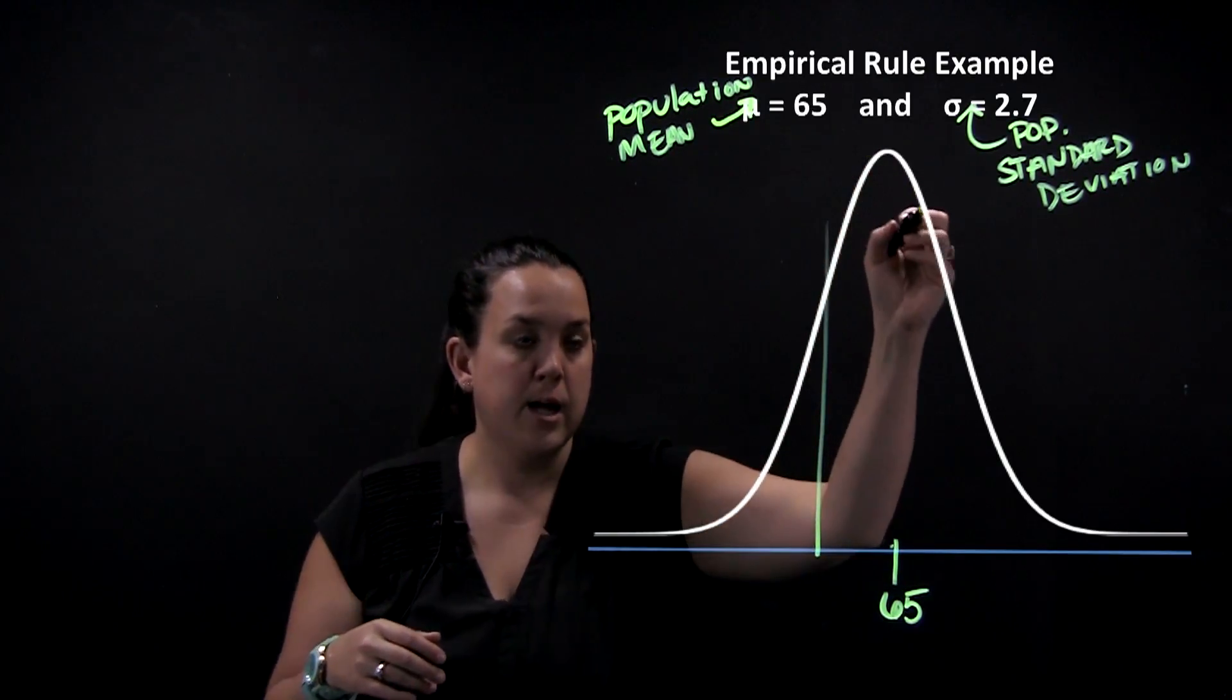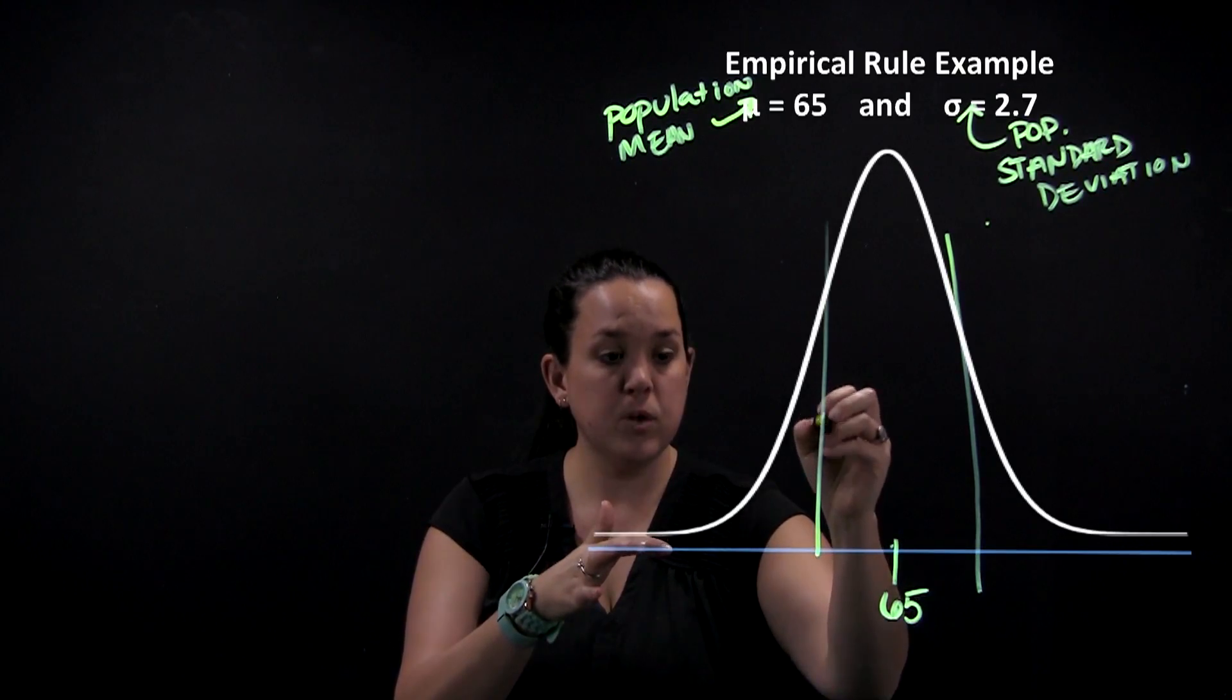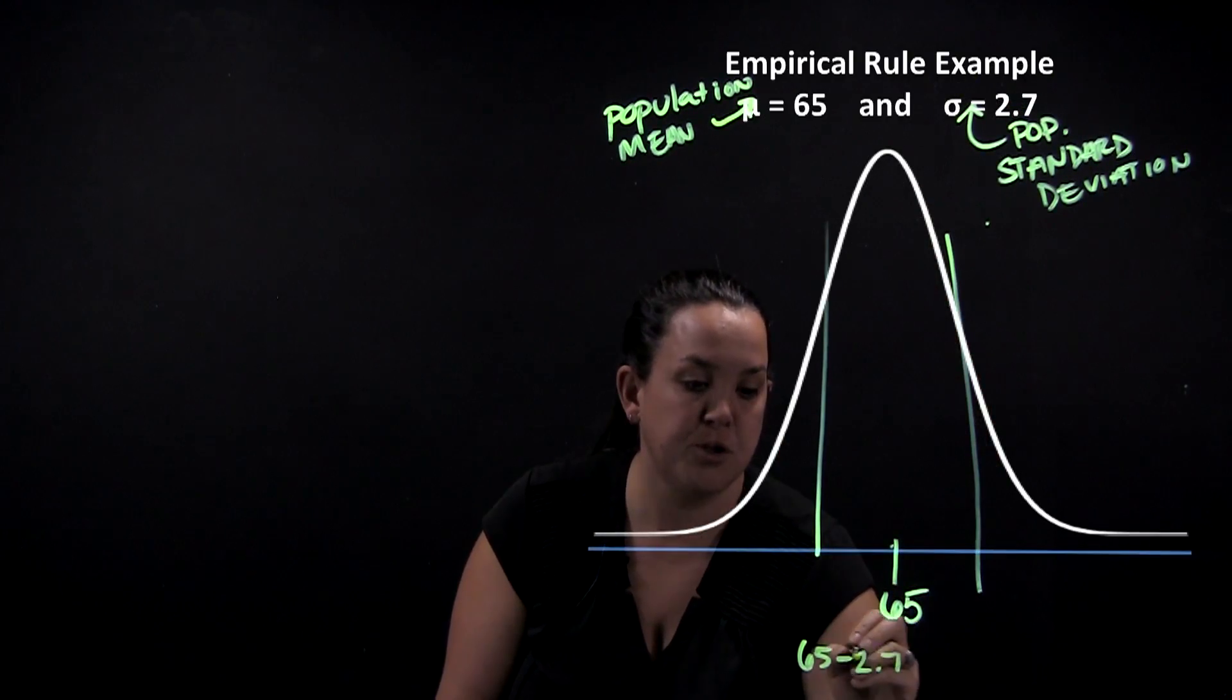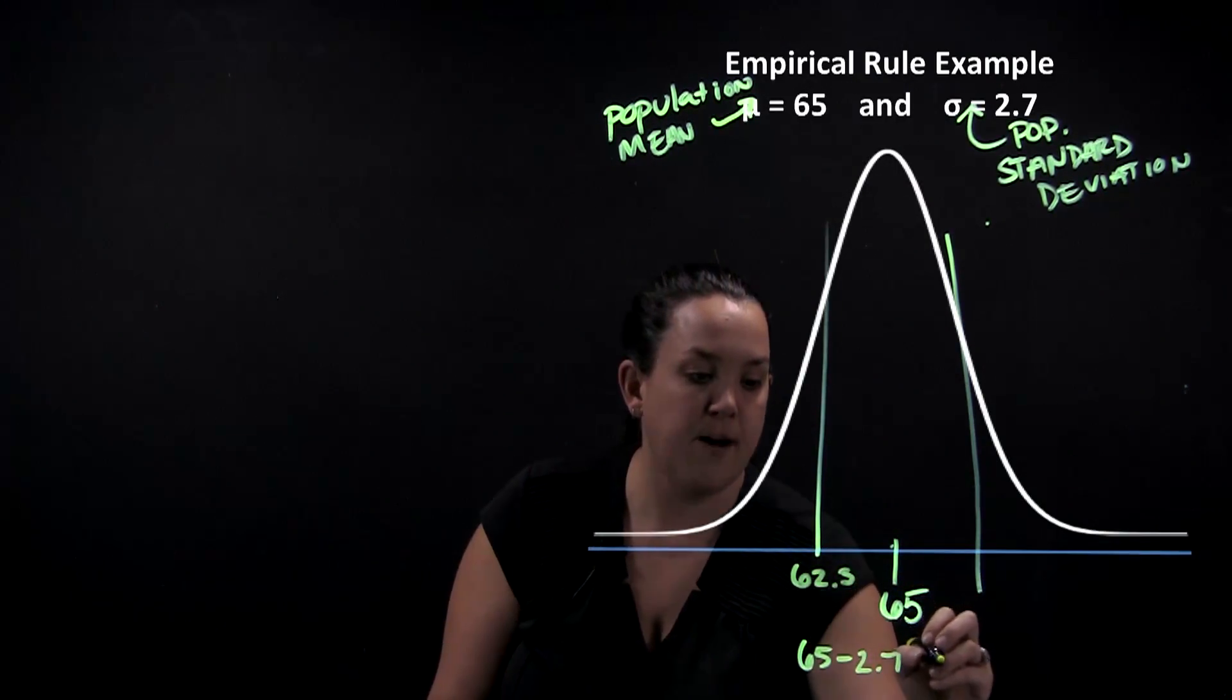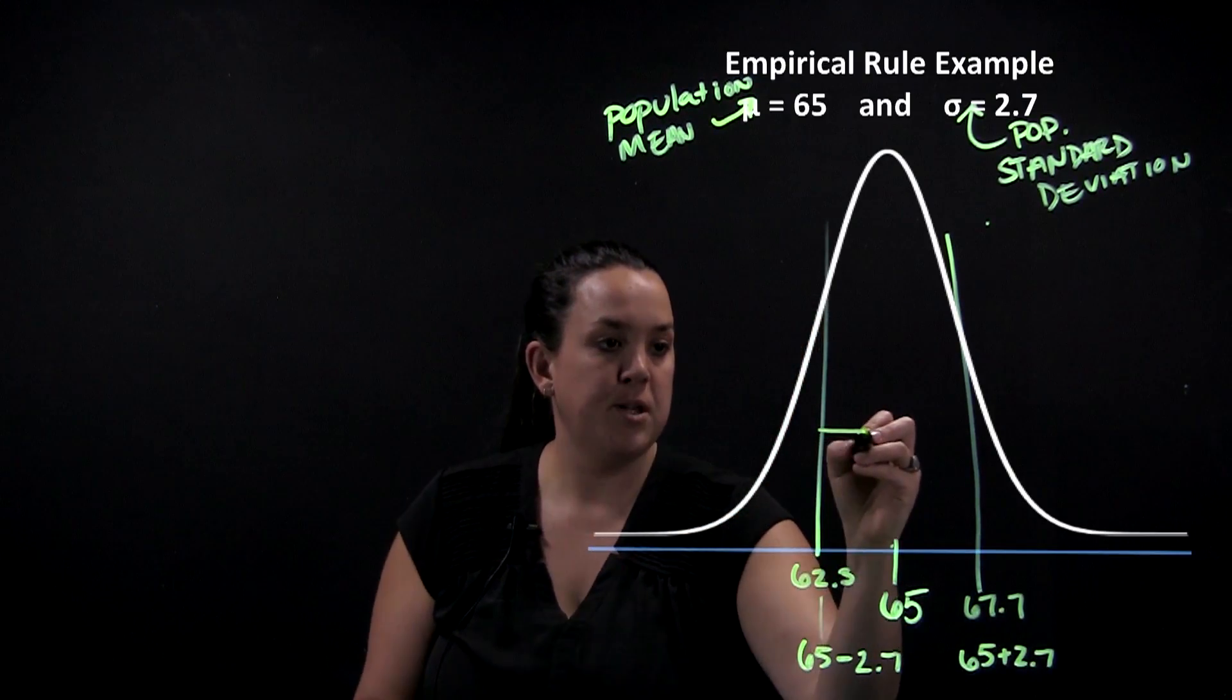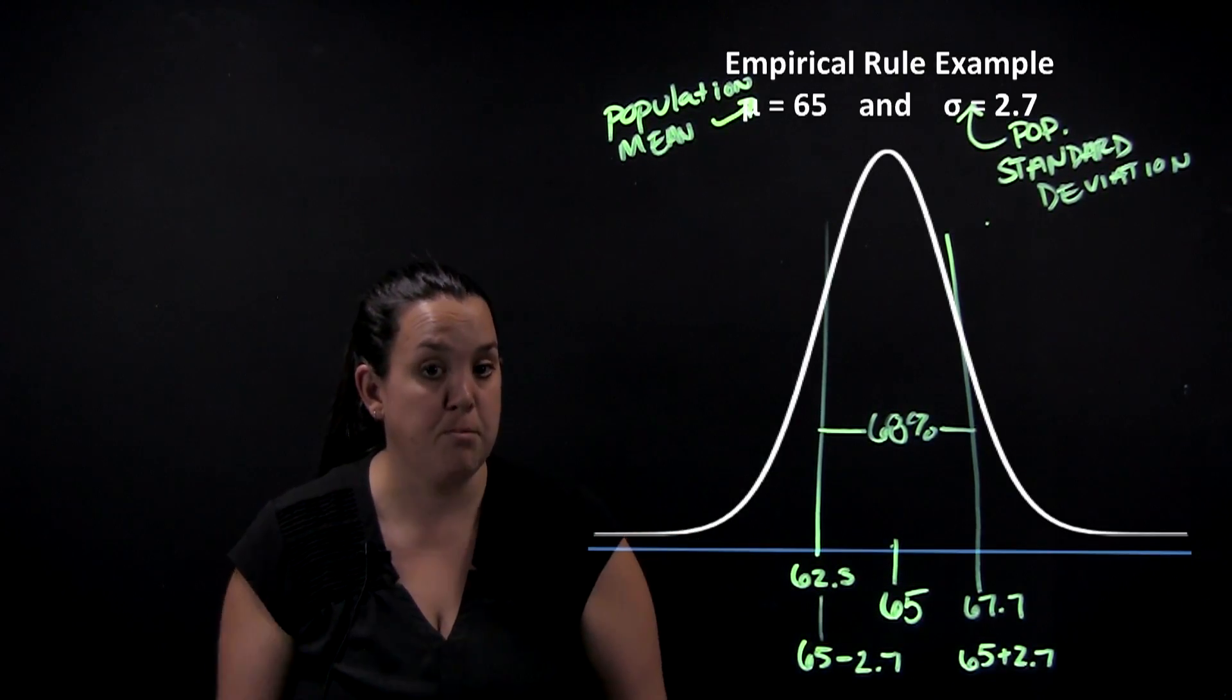And then what the empirical rule does is it goes out one, two, and three standard deviations from the mean in either direction. So here to get out to one standard deviation, I'm going to subtract from 65 the measurement for standard deviation, so that would be one standard deviation below, and that gives me 62.3. And then if I add to 65 one standard deviation, that would bring me out to 67.7. So that means that inside of these two values, 62.3 up to 67.7, we would contain 68% of our population.